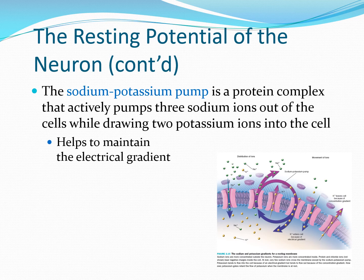After the action potential, the sodium has flowed in — causing the change from negative 70 to positive 40 millivolts — and potassium has flowed out — causing the return from positive 40 back down just below negative 70 millivolts. Now everything is in the wrong place for the process to occur again. This is where the sodium-potassium pump comes in — an active system that takes energy and pumps three sodium ions out of the cell while drawing in two potassium ions, helping maintain the electrical gradient and concentration gradients so the process can occur again.